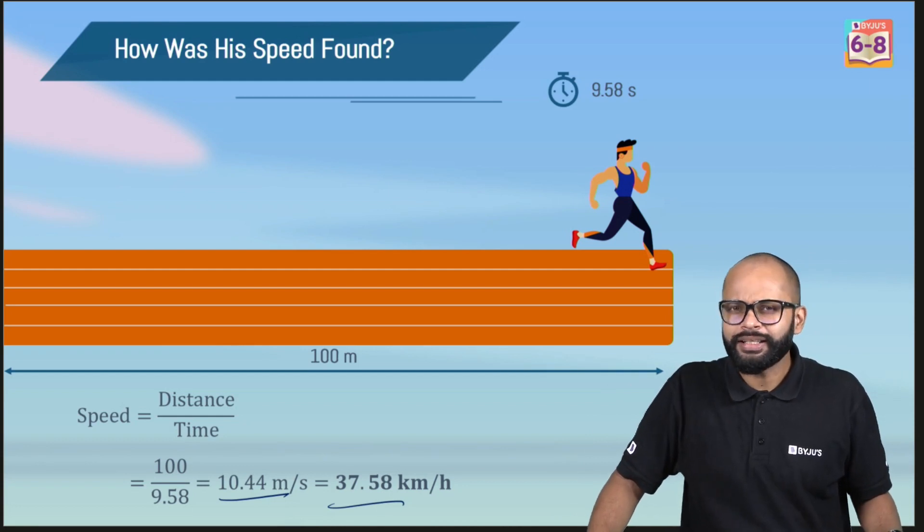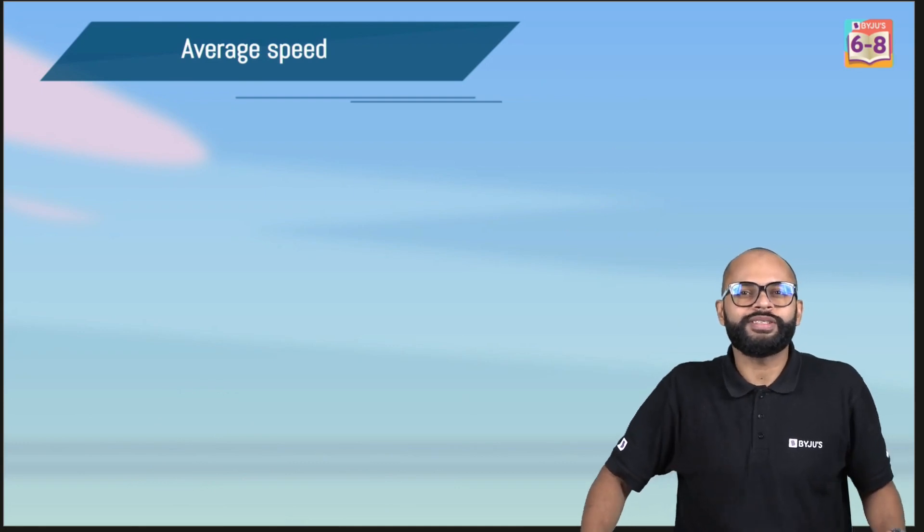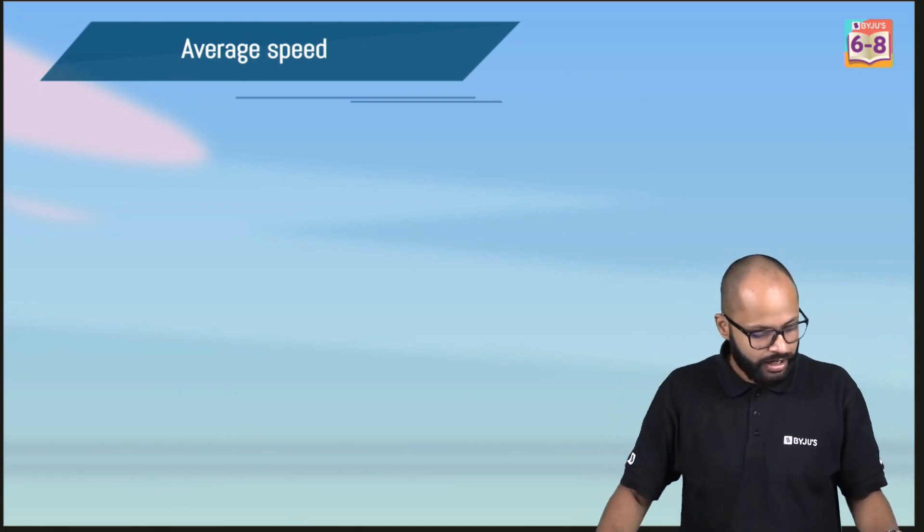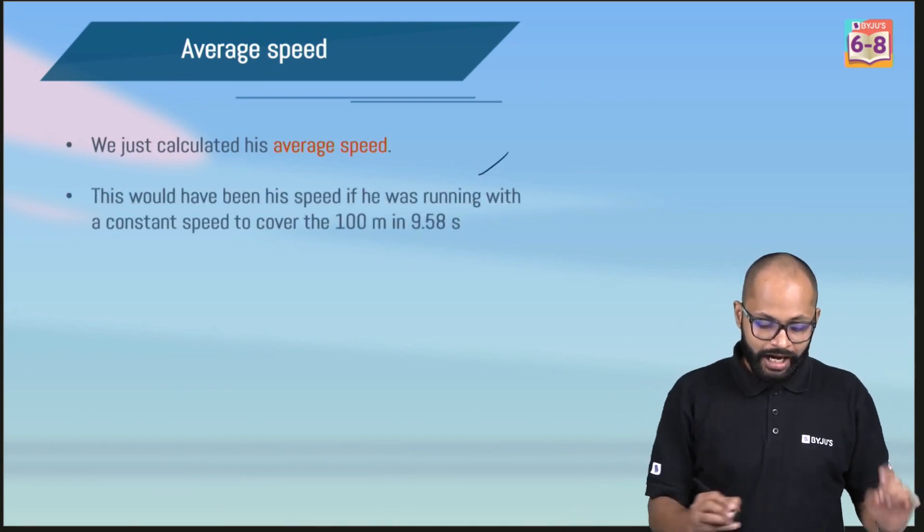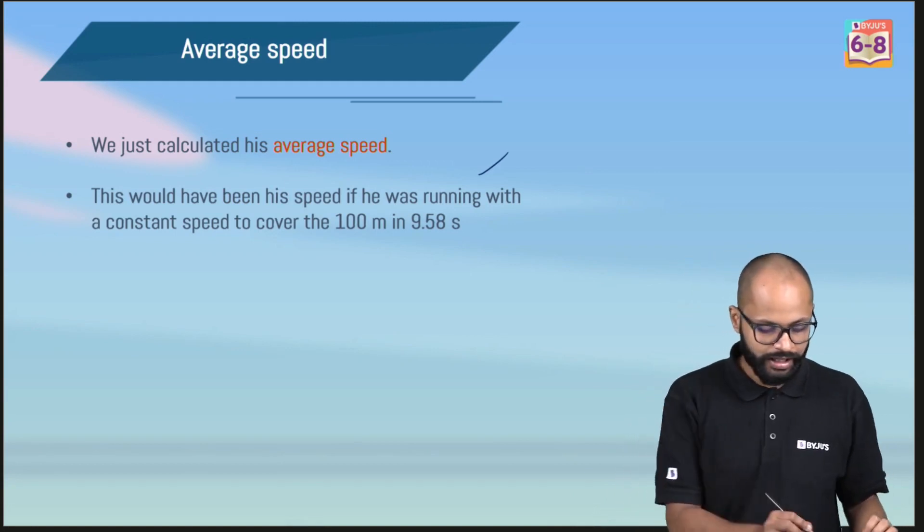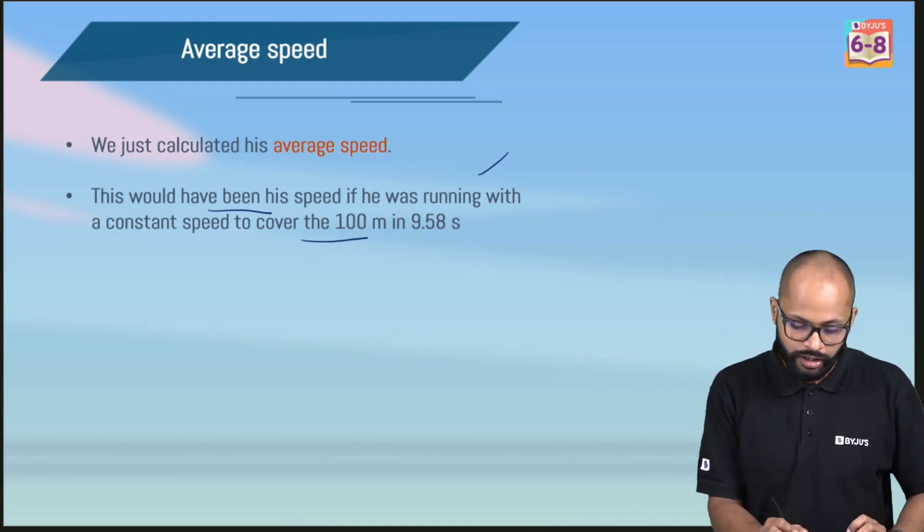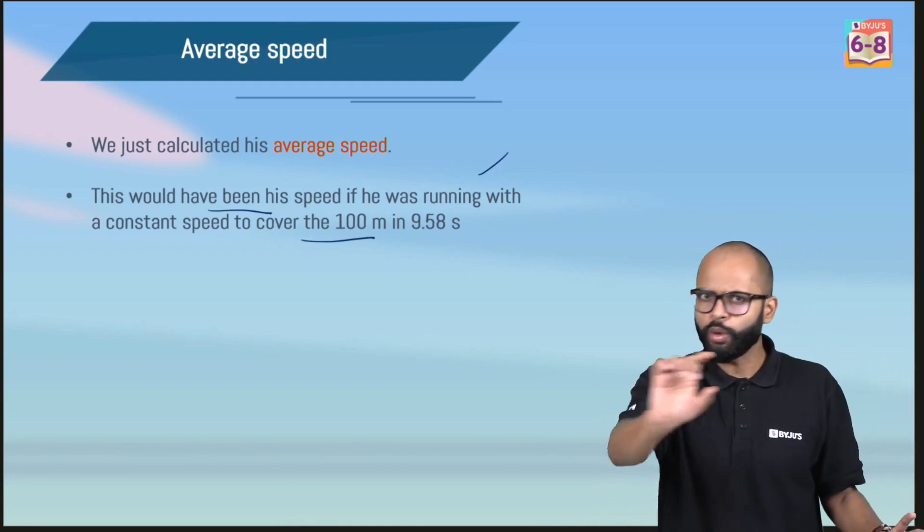But is it like he was running throughout his journey with this speed? No. This was the average speed for the journey of 100 meters. We just calculated the average speed because he started from zero. He wasn't running constantly with this speed. This would have been his speed if he was running with a constant speed to cover the 100 meter in 9.58 seconds. It's like an average of the whole journey.